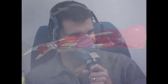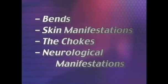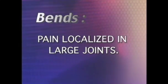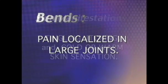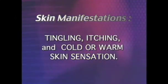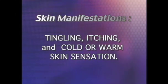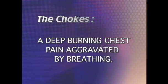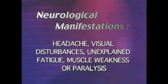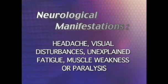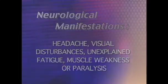Decompression sickness, also referred to as DCS, occurs when the body is exposed to decreased barometric pressure and the nitrogen dissolved in the body comes out of solution and forms bubbles. There are four types of DCS: the bends, pain localized in large joints; skin manifestations, including tingling, itching, and cold or warm skin sensation; the chokes, a deep burning chest pain aggravated by breathing; and neurological manifestations, including headache, visual disturbances, unexplained fatigue, muscle weakness, or paralysis.